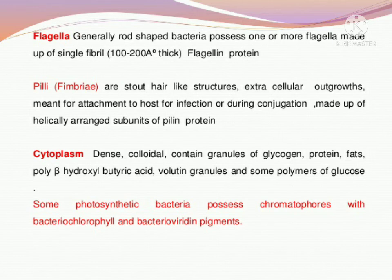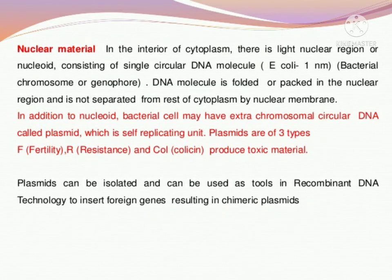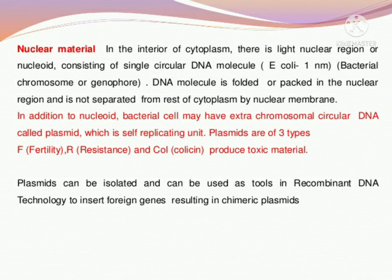Next is the cytoplasm — any colloidal dense particle found in the center, usually containing volutin granules, glucose polymers, or other storage polymers. Then comes the nuclear material. As you know, nuclear membrane is absent in bacterial or prokaryotic cells. So in such organisms, the genetic material lies naked in the cytoplasm — no nuclear membrane is present. It exists as a single circular DNA molecule in the cytoplasm of the prokaryotic cell.